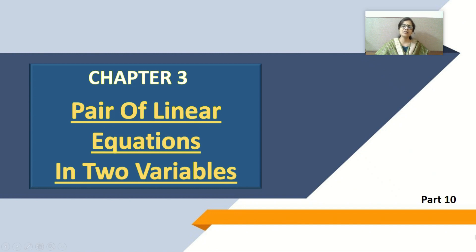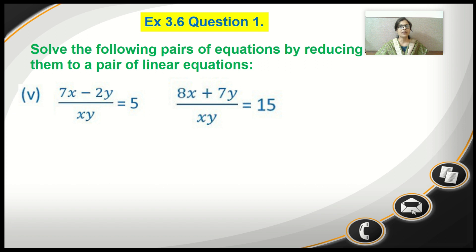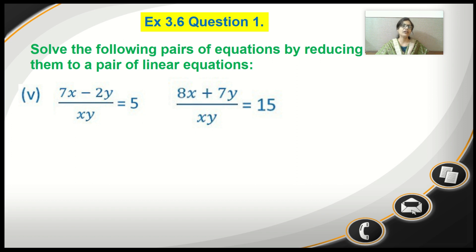Hello dear children. We are here to begin with Exercise 3.6 from Chapter 3, Pair of Linear Equations in Two Variables. We'll begin with the first sum, and the question is: solve the following pairs of equations by reducing them to a pair of linear equations. Looking at both equations, comparing with the standard form, it is clearly seen that they are not a pair of linear equations in two variables. So first we have to reduce or convert them into a pair of linear equations.